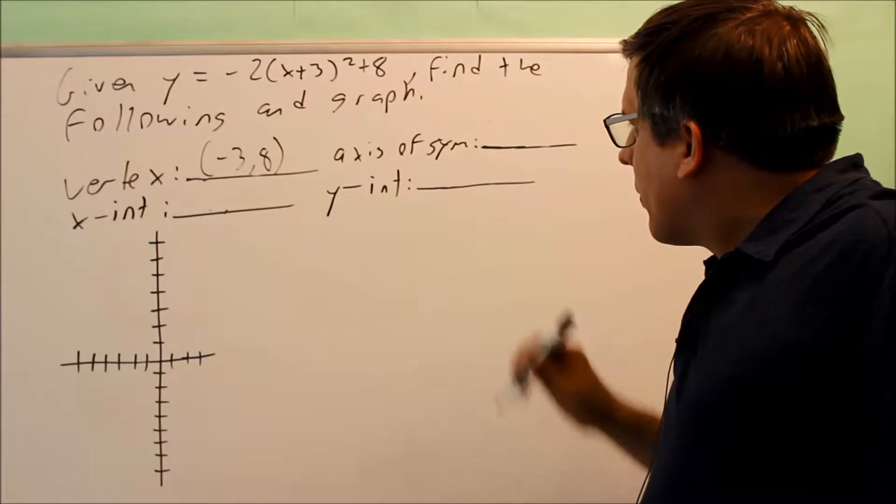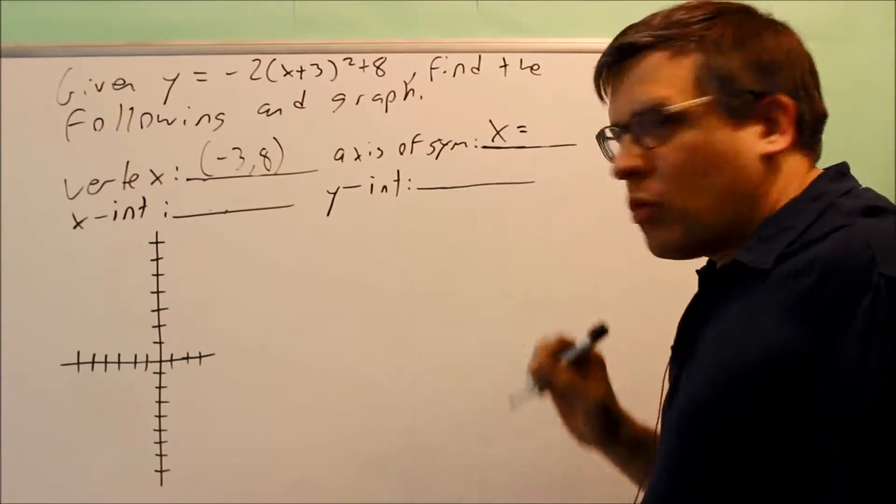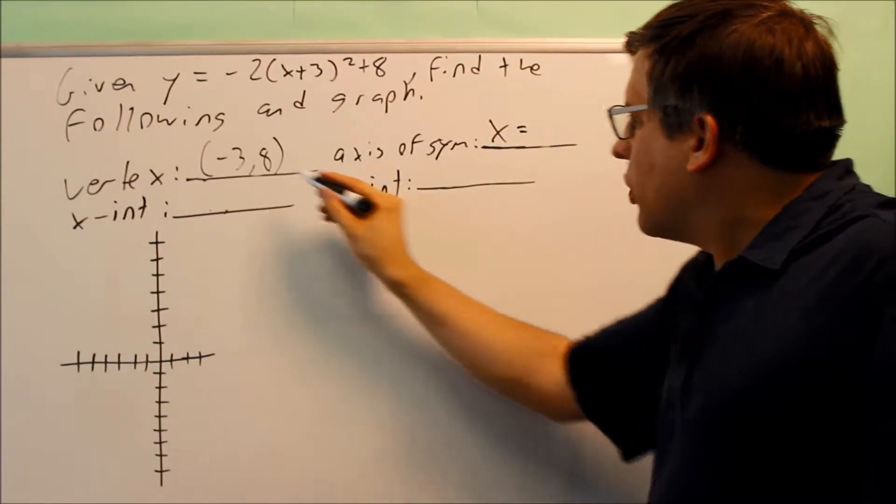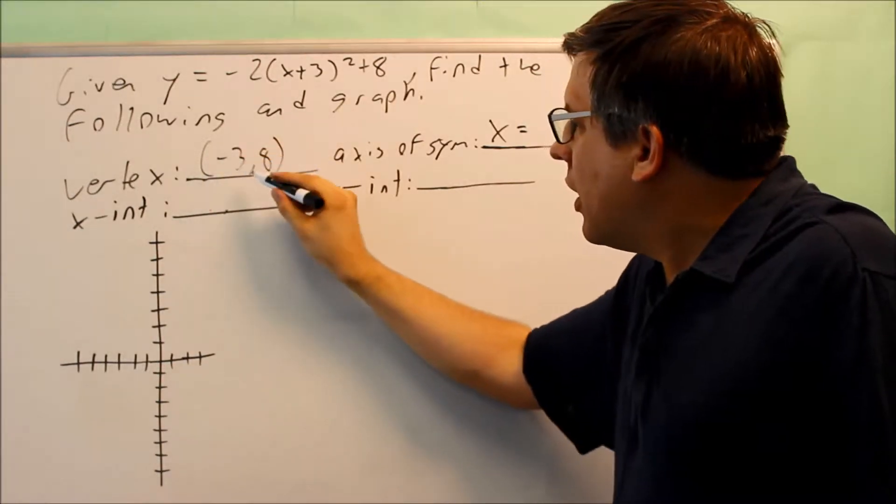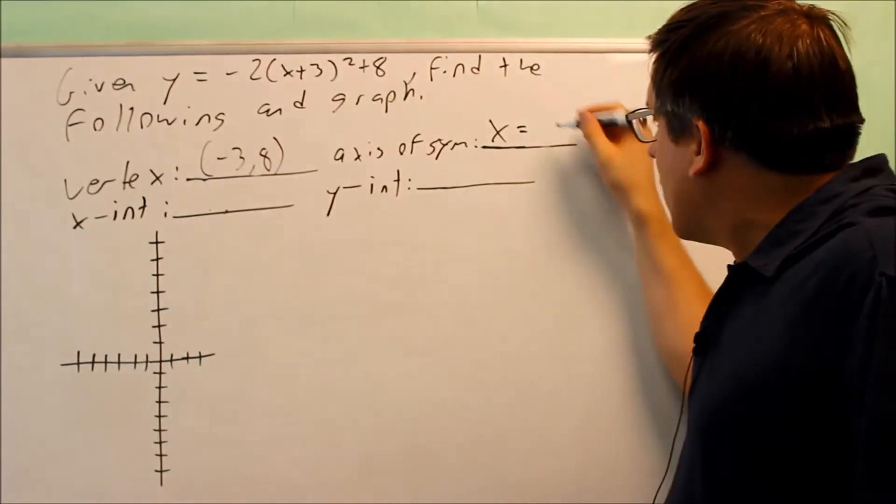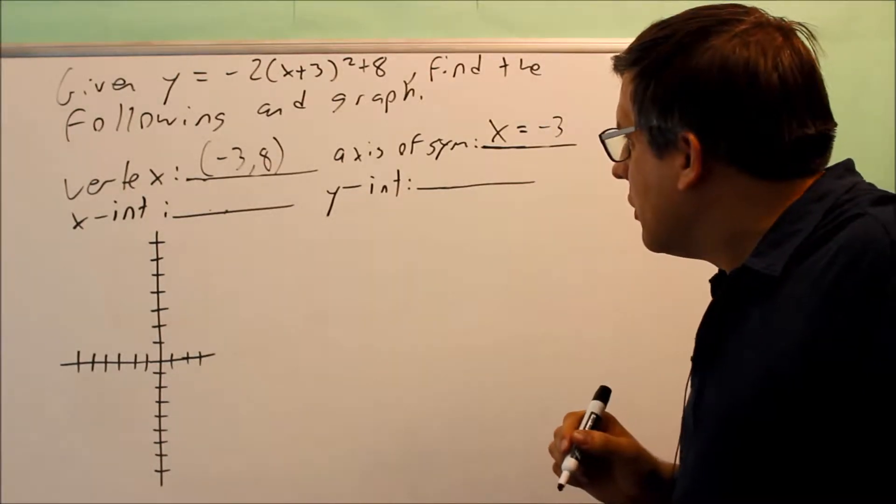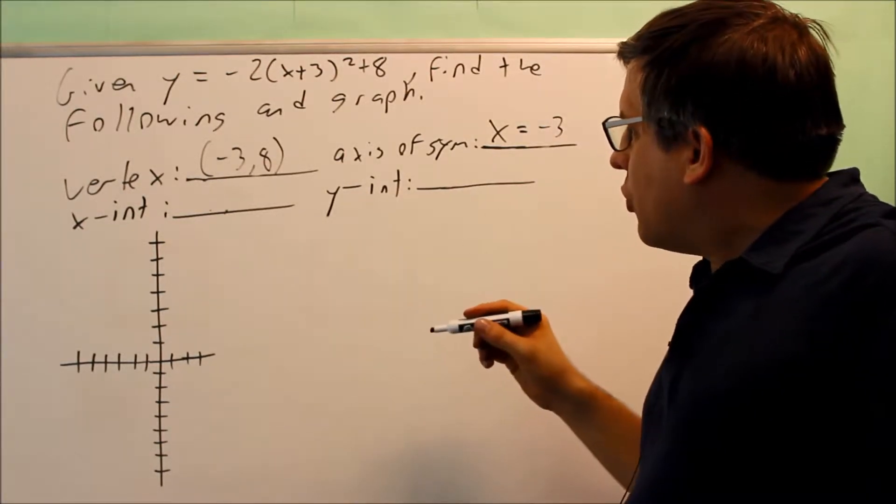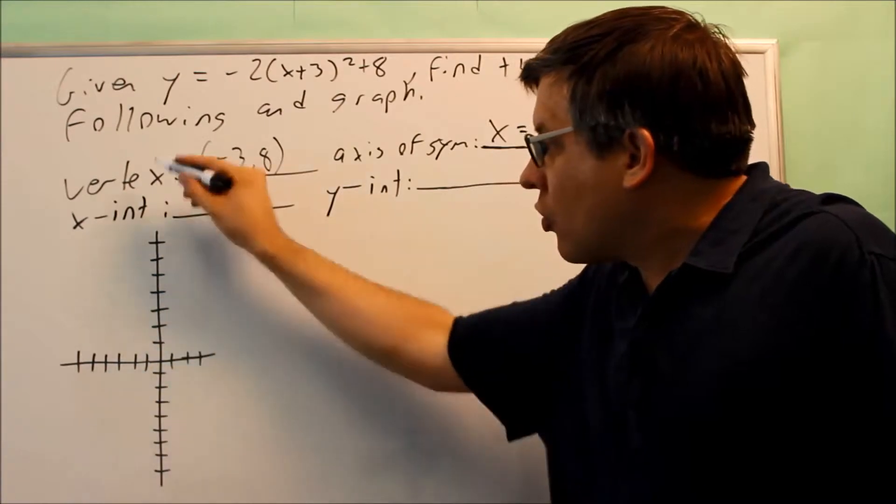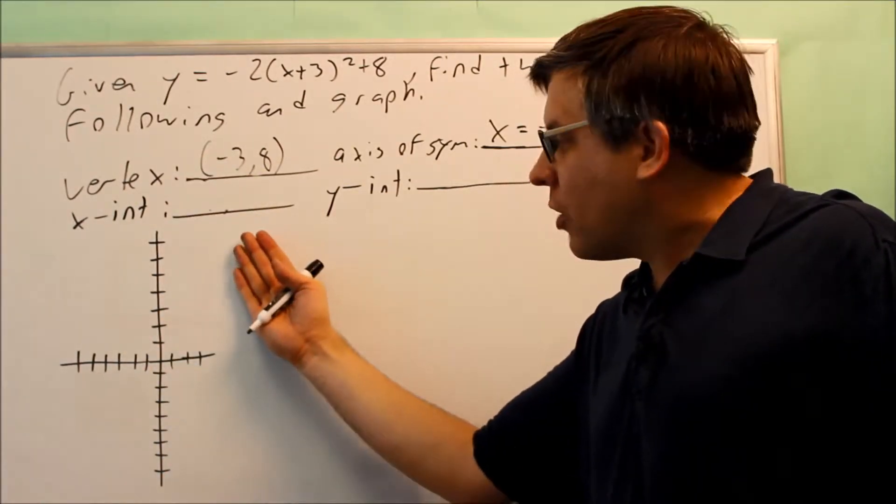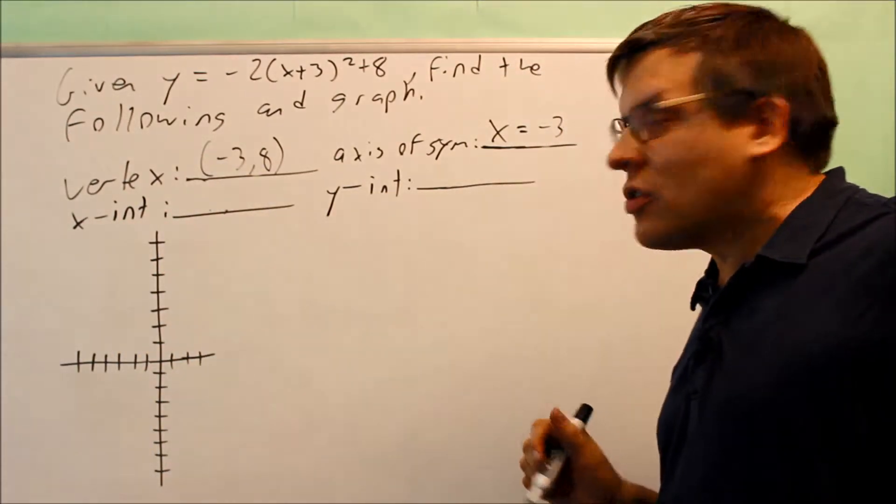The axis of symmetry always begins with x equals something, and it's going to be x equals whatever number comes in front, the first coordinate of your vertex. So in that case, it's going to be x equals negative 3. That's a fold line, so when we draw the graph, you'll have a vertical line going through where you can take one part of the graph and fold it over on top of itself, and that's going to be our fold line there.